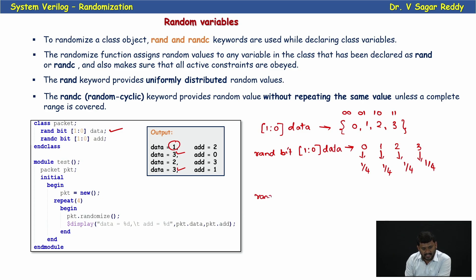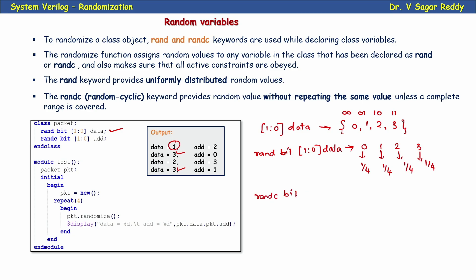Whereas if I declare this variable as randc — for example, randc bit [1:0] address — we also have four possible values: 0, 1, 2, 3. But for each randomization call, the value will not repeat. For example, if in the first call I get 2, then the next call will definitely give a value other than 2 — so 0, 1, or 3. Without repeating the same value unless the complete range is covered. If I randomize four times, I'll get something like 2, 1, 0, 3 — all values covered in one sequence.